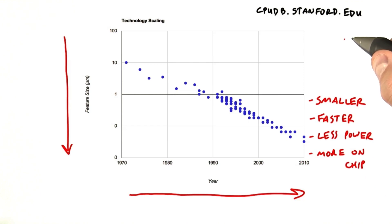As the feature size decreases, transistors get smaller, run faster, use less power, and we can put more of them on a chip. And the consequence is that we have more and more resources for computation every single year.